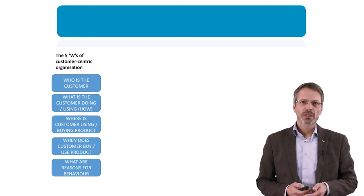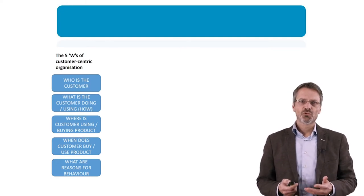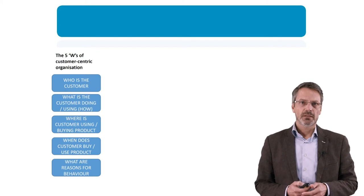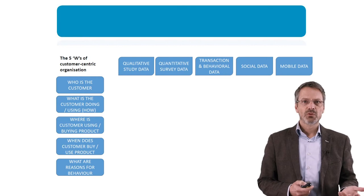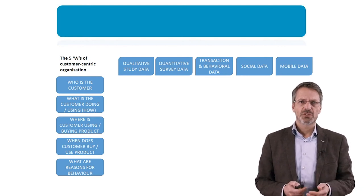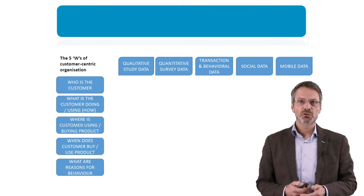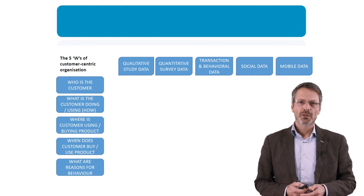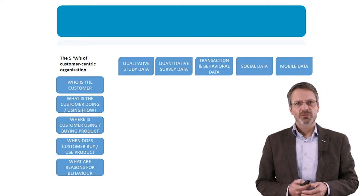In his book, Pieter Verhoef combines these five questions with five sources of data. These data can be qualitative — in-depth interviews for example — or quantitative from survey questions, or transactional and behavioural data from the ticketing or ICT system, or social data from social media, or mobile data based on location. The book makes clear when you can best use which type of data.